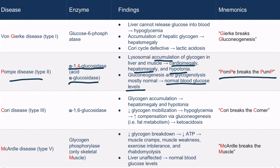Pompe disease can be remembered by the phrase 'Pompe breaks the pump.' The pump refers to the heart. The four Ps in this phrase can also help you remember that the four is associated with alpha-1,4 glucosidase, which is the deficient enzyme.